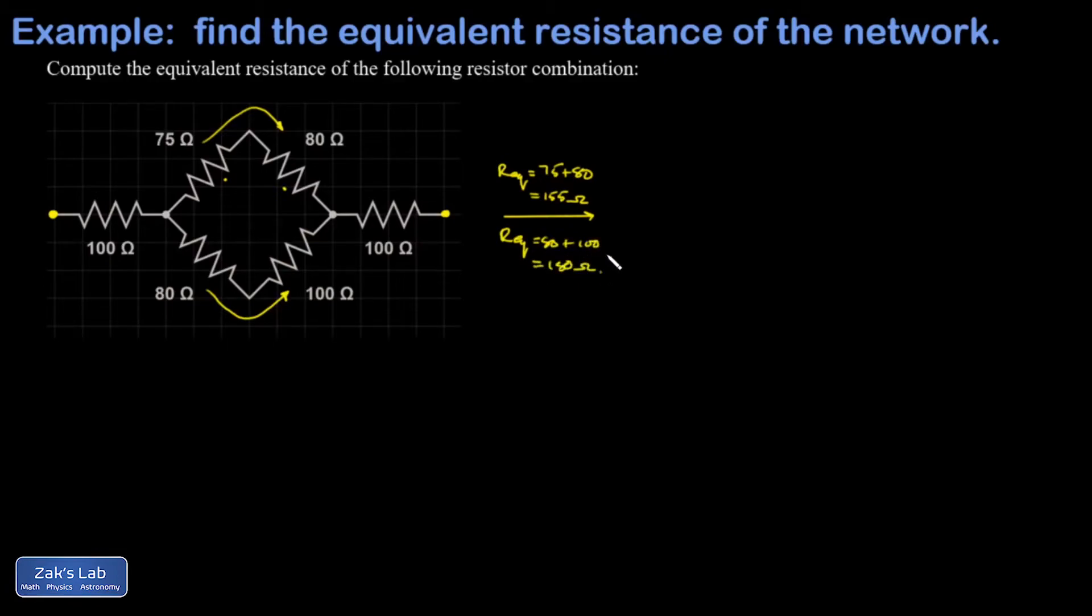Now we redraw the circuit with each of those pairs simplified into a single equivalent. There's our redrawn circuit, and I just, instead of having diagonal lines, I just changed to these squared off lines. Nothing changes about the options for current flowing through this network.